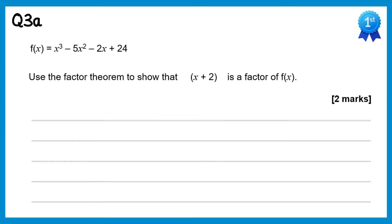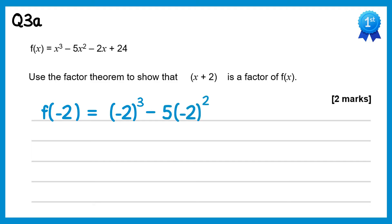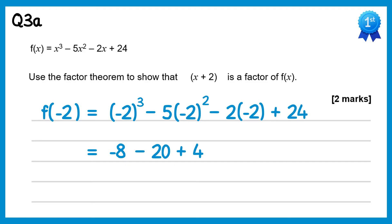For this one we need to show that x plus 2 is a factor, so we'll do f of negative 2. That's negative 2 cubed, take away 5 lots of negative 2 squared, take away 2 lots of negative 2, add 24. Negative 2 cubed is negative 8. Negative 2 squared is 4 and then times negative 5 is negative 20. Negative 2 times negative 2 is positive 4, and then plus 24. If you do this you get 0, so x plus 2 must be a factor.